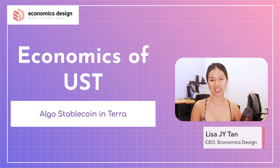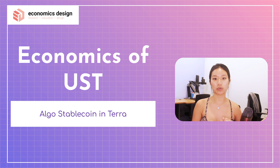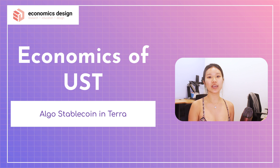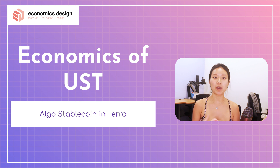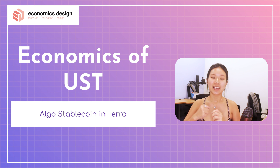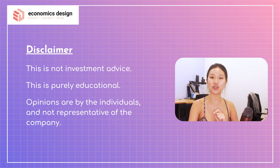Welcome to a new episode at Economics Design. At Economics Design, we focus on fundamentals — how protocols work, how protocols behave, and how to analyze the robustness of these protocols. Today, we are talking about UST, the stablecoin in the Terra network. This stablecoin has been talked about for a very long time, and a lot of people have been requesting this video. UST is an algo stablecoin that is native to the Terra blockchain, and today we're going to dive deep into this protocol.